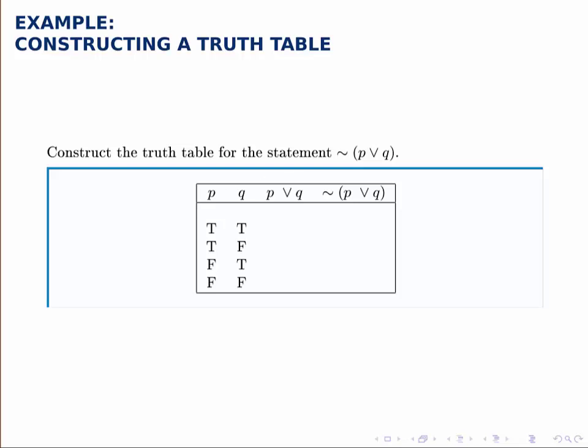We only have two individual statements, P and Q, so the first two columns look identical to all the ones we'll do with two statements. We have true true, true false, false true, false false - all possible combinations of true and false for P and Q.